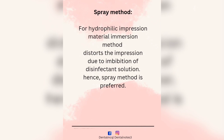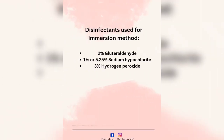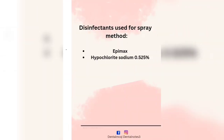Under hydrophilic impression materials we have alginate and agar-agar impressions, so the spray method is used for these. The disinfectants used for the immersion method are 2% glutaraldehyde, 1% or 5.25% sodium hypochlorite, and 3% hydrogen peroxide. The disinfectants used for the spray method are Epimax and sodium hypochlorite 0.5% to 5%.